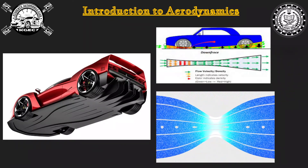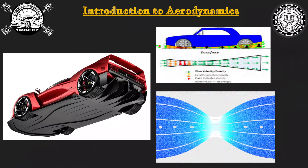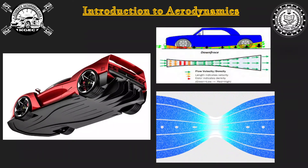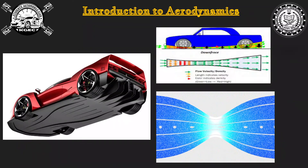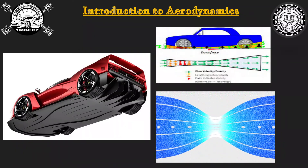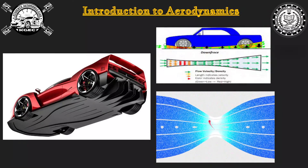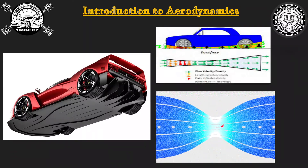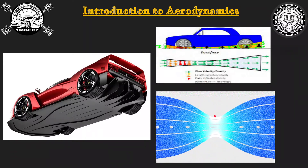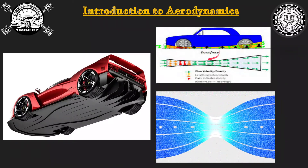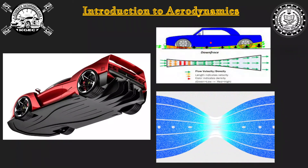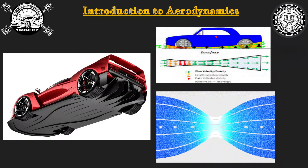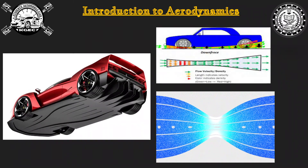What the diffuser does is create a venturi effect. Initially, low pressure air is moving from the underside — this is faster-flowing air. As the airstream moves through the constricted region it speeds up, and as velocity increases, pressure decreases. So there is low pressure at the bottom, which creates a suction effect that sucks the vehicle to the ground.